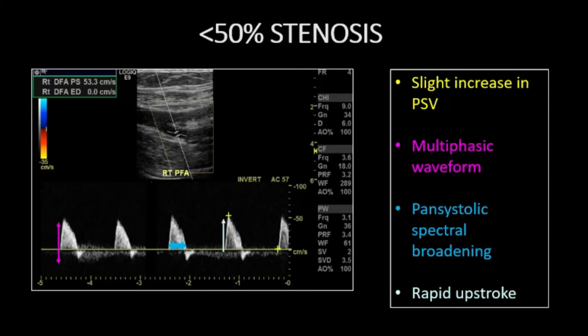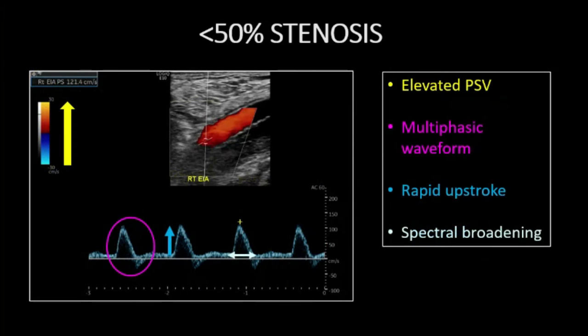Stenotic lesions with less than 50% luminal loss will also result in mildly increased peak systolic velocities. The waveform maintains a multiphasic pattern, but with decrease in the duration of early diastolic flow reversal. The upstroke of the systolic phase remains rapid or sharp, but spectral broadening occurs as the normal laminar flow pattern is disrupted and turbulence occurs.